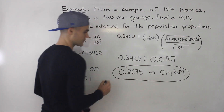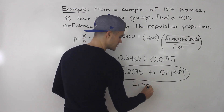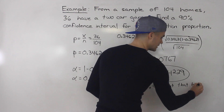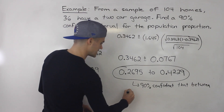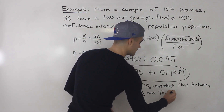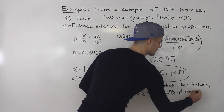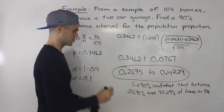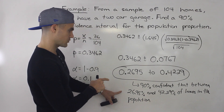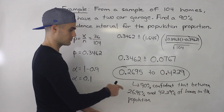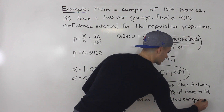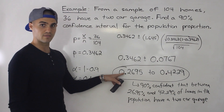That is the 90% confidence interval. We can be 90% confident that between 26.95% and 42.29% of homes in the population have a two-car garage — assuming the sample represents something like a whole country's population.